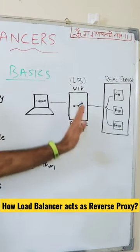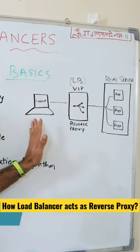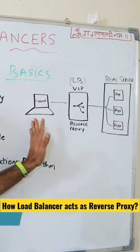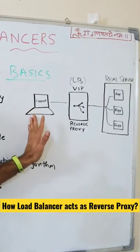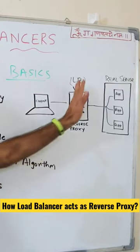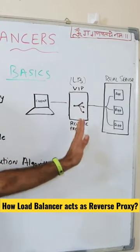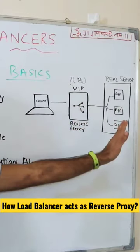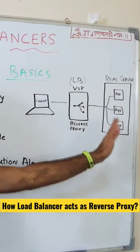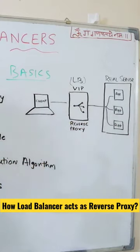This virtual IP would be exposed to the client, so when a client is accessing any application, they will send the request to this virtual IP, and then this virtual IP will send that subsequent request to the backend server. This is how the communication works.